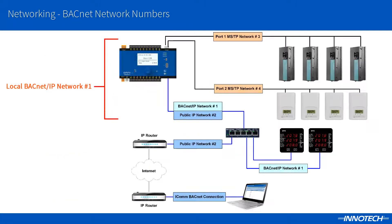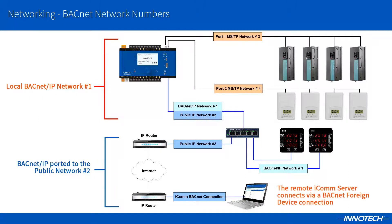The public network is used for access to the site via a router. The public BACnet network is another segment with a network number 2 by default. ICOM can connect to this site via a BACnet foreign device connection, and all BACnet devices are discovered via this connection.